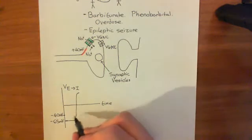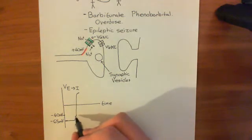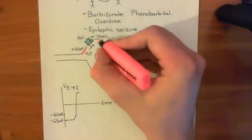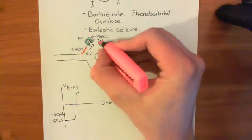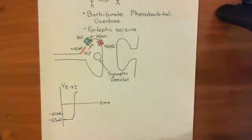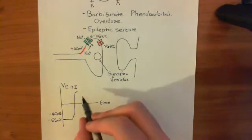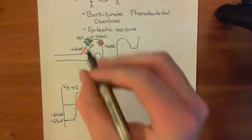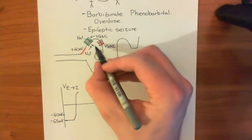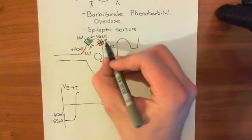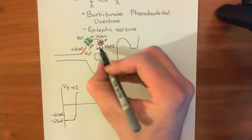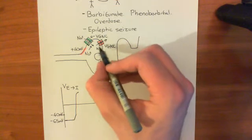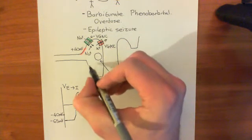The voltage-gated potassium channels were activated at the same point as the voltage-gated sodium channels, but the difference is that they take a much longer time to open. So they start opening at the same point as the sodium channels are just about closing. Closing of the sodium channels means no more sodium current comes into the cell, and opening of the voltage-gated potassium channels means potassium starts leaving the cell — a movement of positive charge out of the cell.